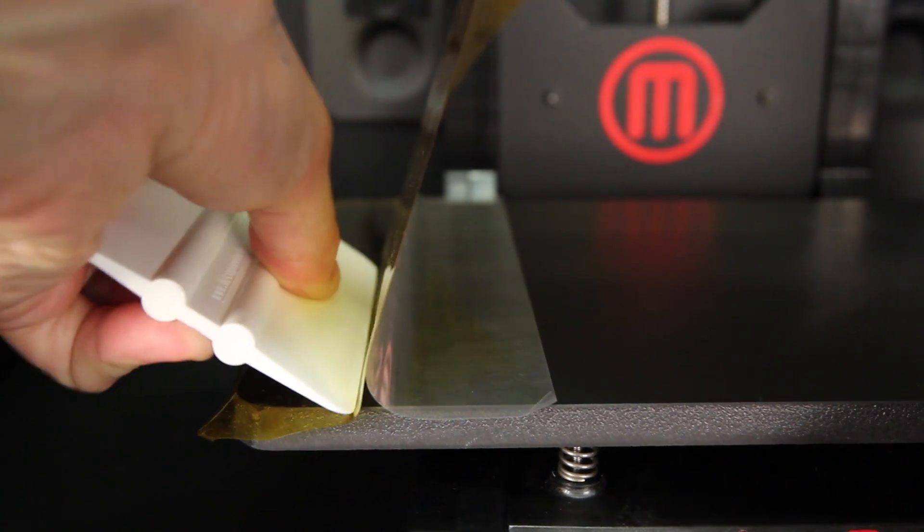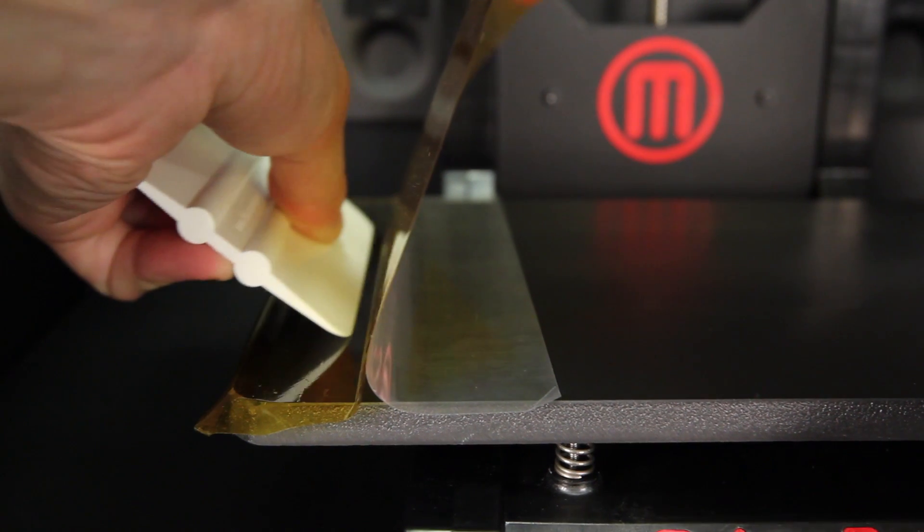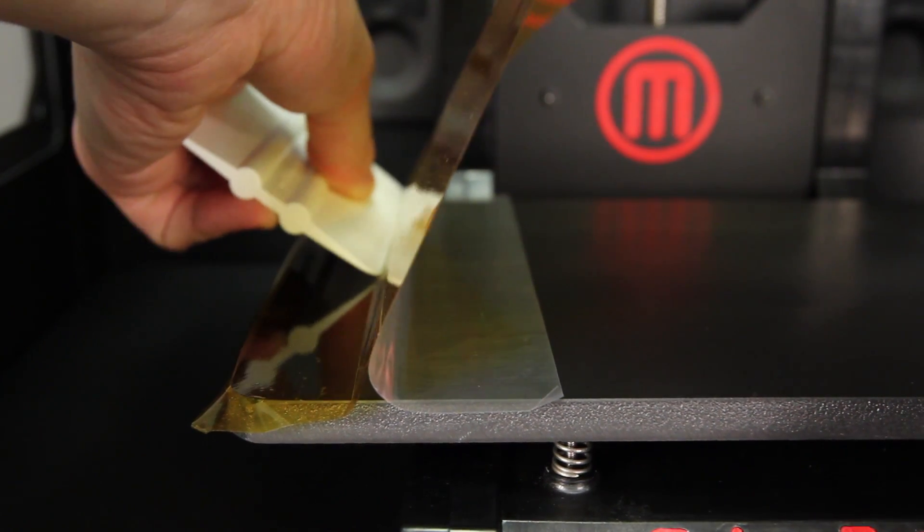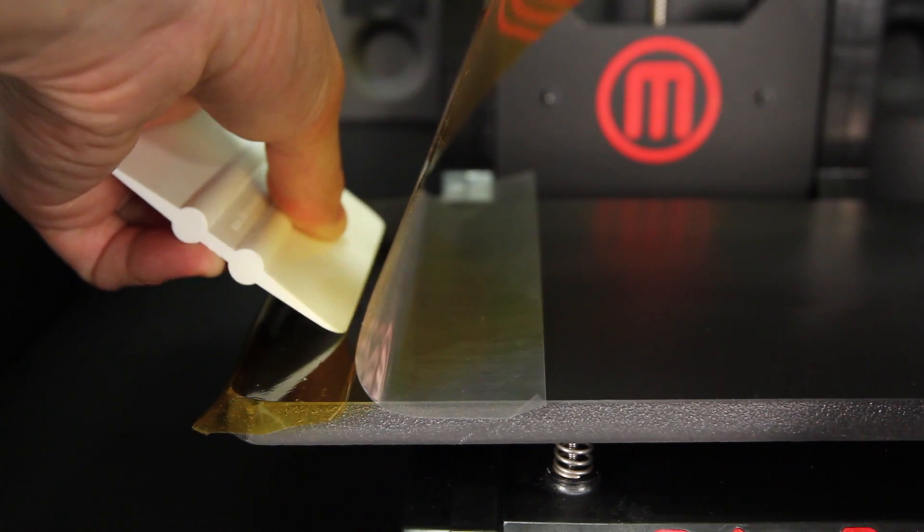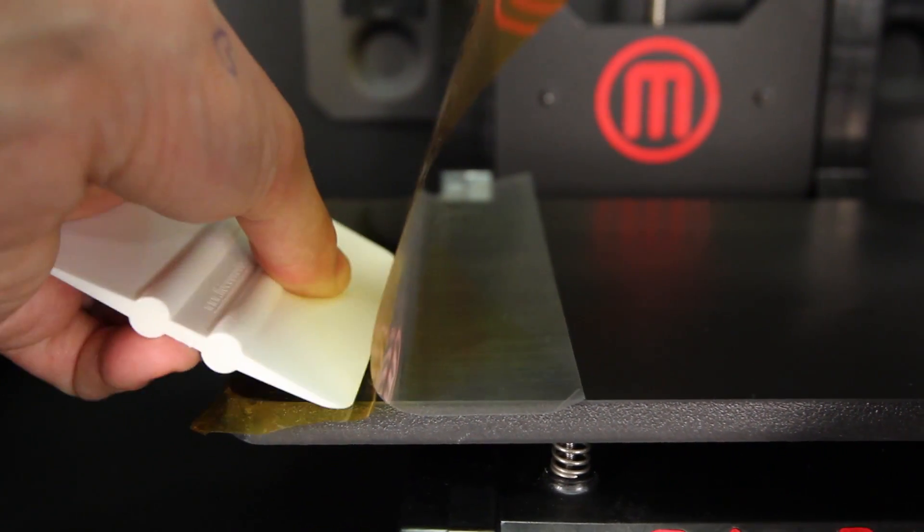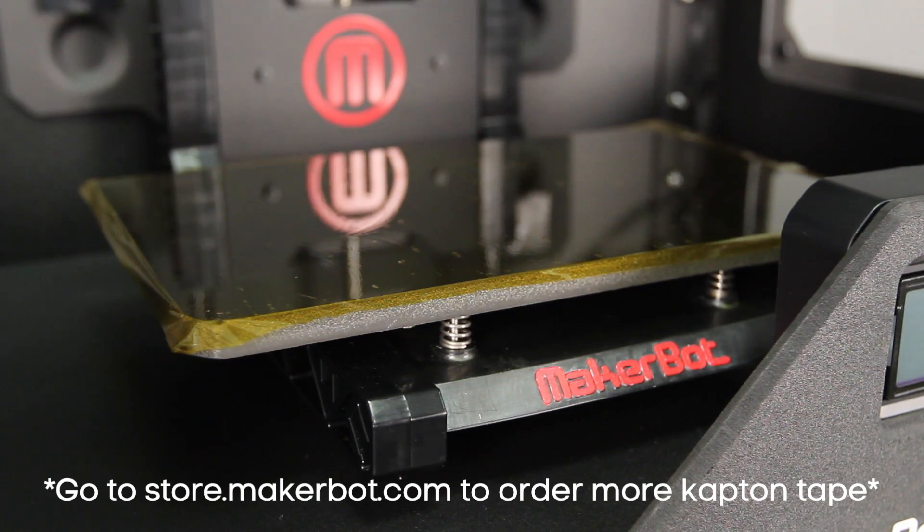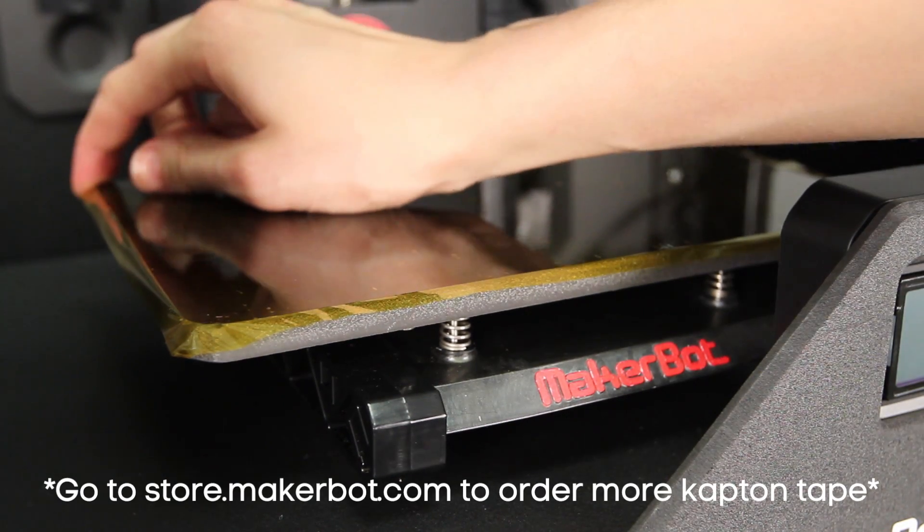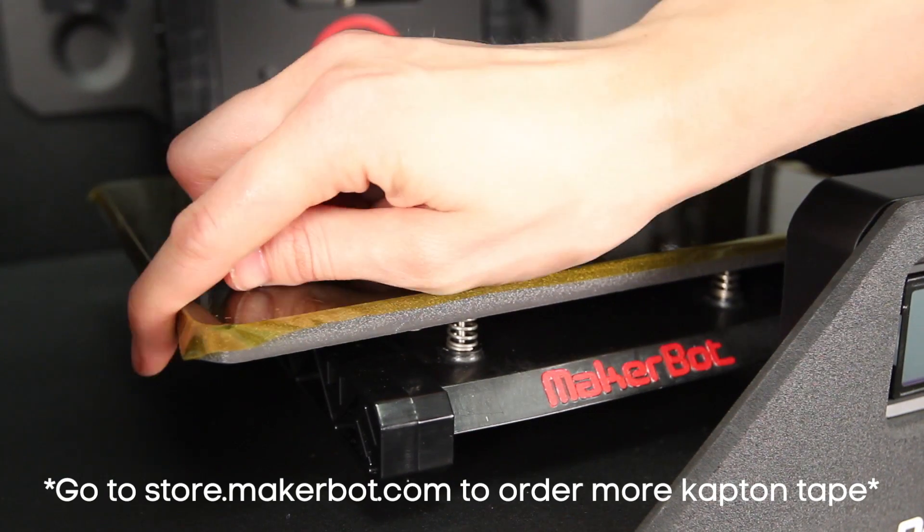Now peel off the plastic backing bit by bit while smoothing the newly exposed Kapton tape. Use the tape applicator from your customer kit to add pressure and remove bubbles. When the Kapton tape is applied as smoothly as possible, fold the edges down over the build plate.